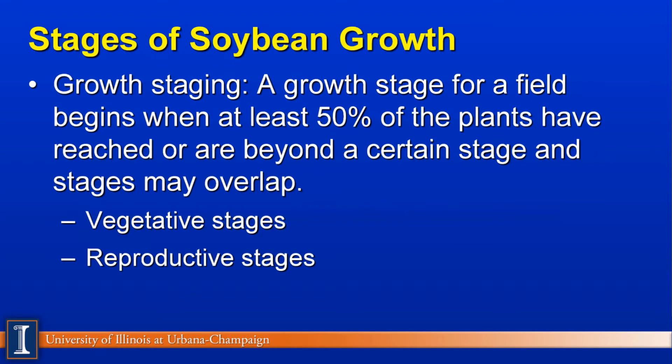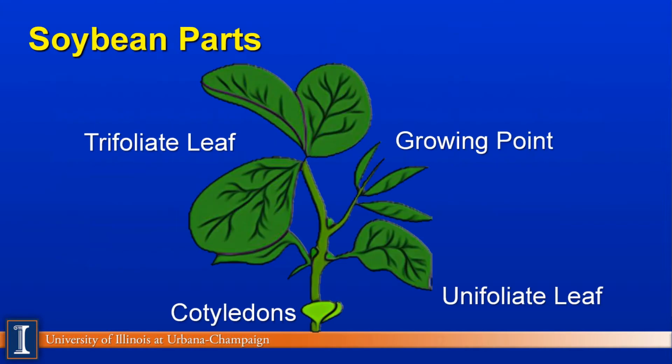There are various stages of growth with soybeans. The growth stage we refer to here will be when a field begins to have at least 50% of the plants that have reached or gone beyond a certain stage, and some of these stages may overlap. The two major stages we'll look at include the vegetative stages and the reproductive stages. This simply shows a drawing of the soybean plant so you can get oriented in terms of the various parts of the plant, which we will be referring to in just a few minutes.